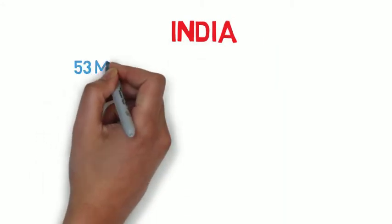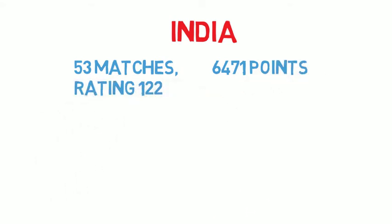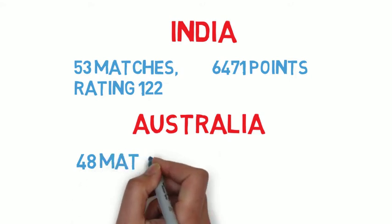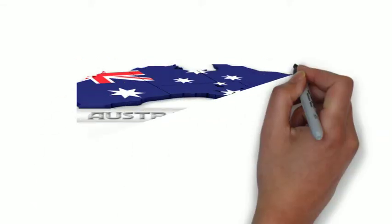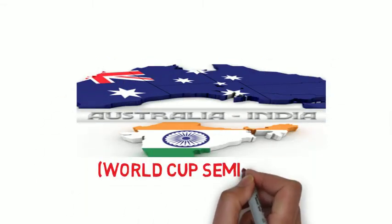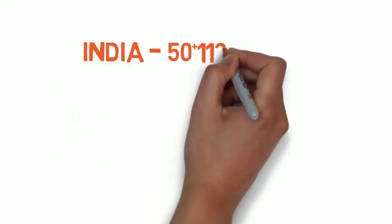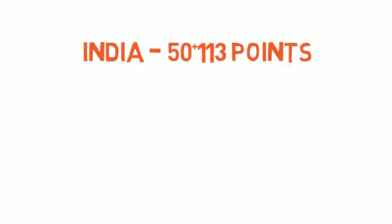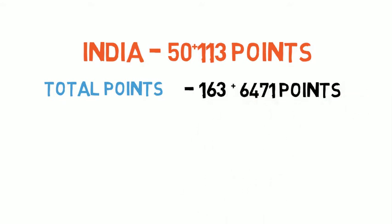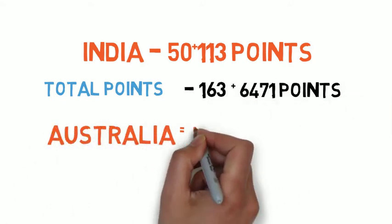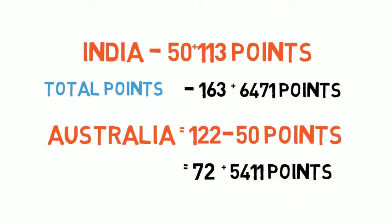Let's understand this with an example. India has currently played 53 matches, earned 6,471 points, and has a rating of 122. Australia has played 48 matches, earned 5,411 points, and has a rating of 113. If there is a match between these two countries — say, a World Cup semi-final — and India wins, India will earn 50 plus 113 points, which equals 163 points. That gets added to India's previous 6,471 points. Australia, on the other hand, will earn 122 minus 50, which is 72 points, added to their 5,411 points.